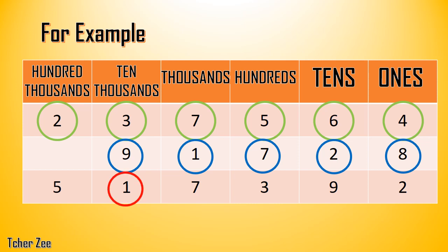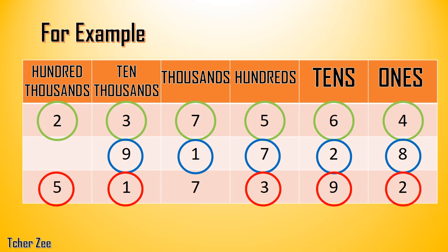How about 1? Yes, that's ten-thousands place value. How about 3? Very good, that's hundred-thousands place value. And 9? Yes, tens place value. 5? Hundred-thousands — yes. 2? Ones — very good. And 7 is? Yes, that's in the thousands place value. Good job.